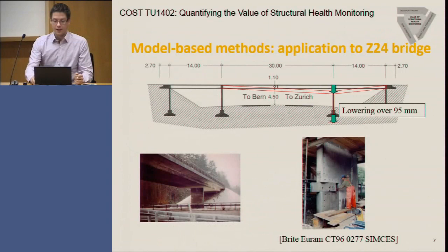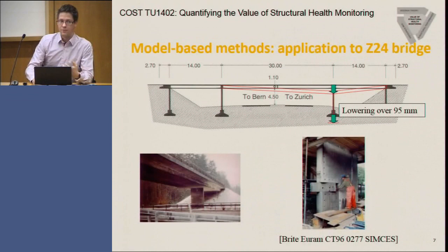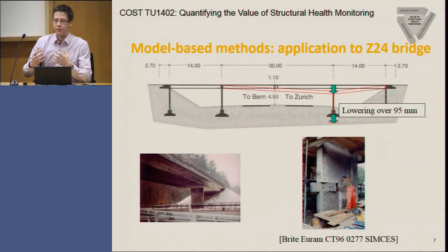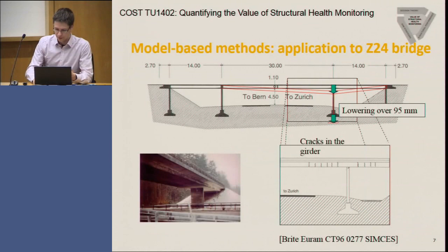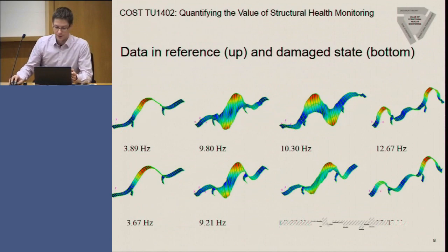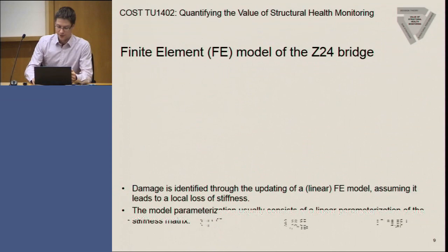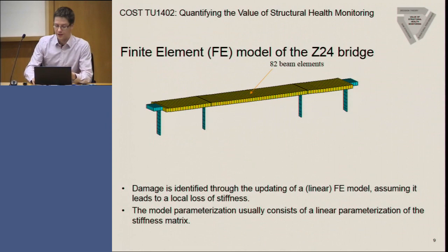The second class of methods are model-based methods. With these methods, we have a finite element model available of the structure in the reference state. We update it with measurement data from the reference state and then update it with measurement data from the damage state, and we get the damage information from the differences between the models. This is illustrated with the example of the Z24 bridge, where one column was lowered as a damage scenario, causing cracks in the girder. The modal parameters in the reference state and in the damage state show a clear drop in frequencies. This information is then used to update a finite element model, where damage is identified through updating the model assuming a local loss in stiffness, using damage functions for parameterization.